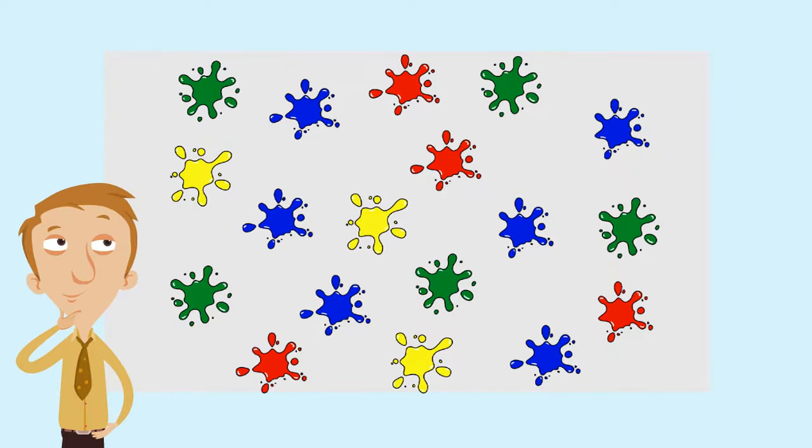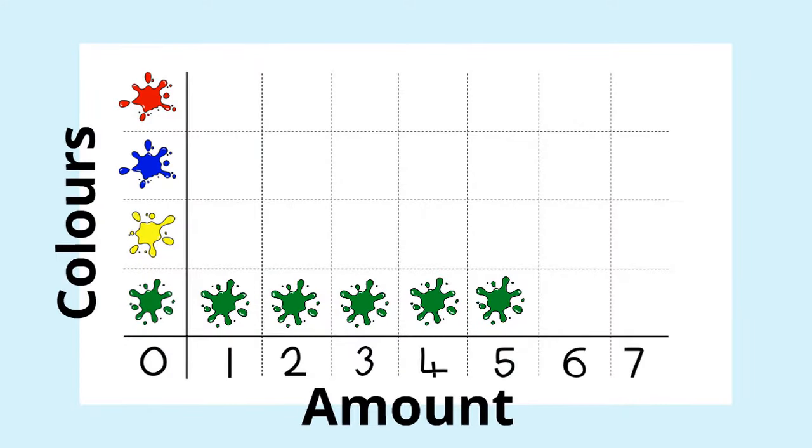Well let's go back and check. Count them up. So you should have five green splats. All we do is organize them onto the pictogram by drawing the five green splats.